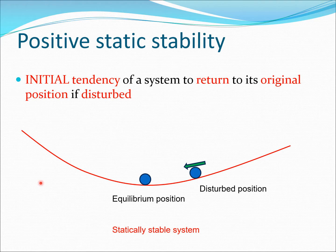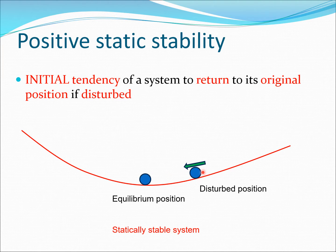Before we look at aircraft, let us look at a simple system first. Here I have considered a bowl-shaped system with a ball at the equilibrium position. If I move this ball to some other place — giving it a small disturbance — because of this bowl system, the ball is going to want to make its way back to the equilibrium position. This system has an initial tendency to return to its original position if disturbed, and this is known as a positive statically stable system, or positive static stability.